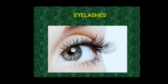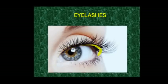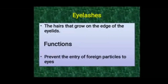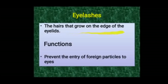Next are eyelashes — somewhat curved hairs seen at the ridge of our eyelids, both on the upper and lower eyelids. The hairs that grow on the edges of the eyelids are called eyelashes. Their major function is to prevent the entry of foreign particles into the eyes.